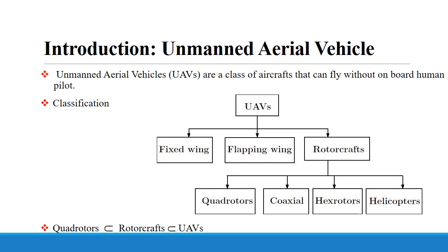Unmanned aerial vehicles are a class of aircraft which fly without a human pilot on board. The major classifications according to wing structure are fixed wing, flapping wing, and rotor aircraft. These rotorcraft are further classified according to the number of rotors and structure — they include quadrotors, coaxial, hex rotors, and helicopters.